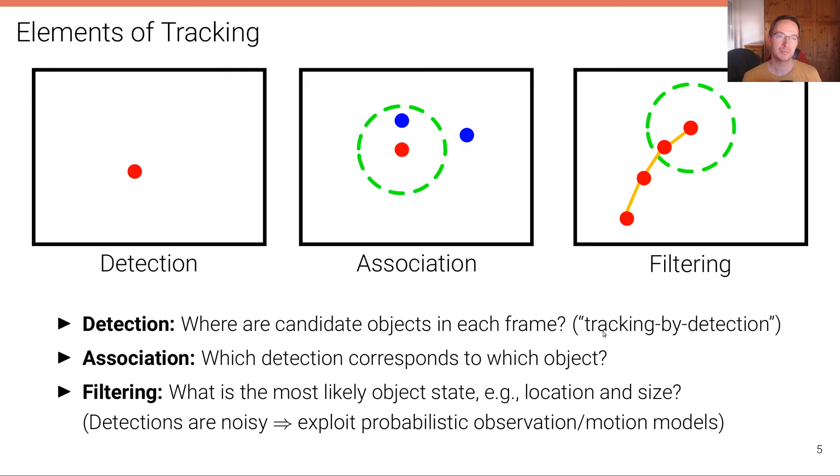So let's start by considering the elements of tracking. Tracking comprises two or three elements depending on if you consider detection to be part of tracking, but that's what we're going to do here. We're going to consider something that's called tracking by detection, where detection is an integral part of the tracking problem. So we have three problems, detection, association and filtering.